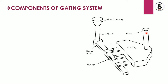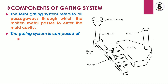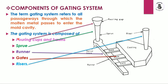In this video we are focusing more on the riser and risering systems and their importance in a casting process. The term gating system refers to all the passageways through which the molten metal passes to enter the mold cavity. The gating system is composed of different components: pouring cup, sprue, sprue base, runner, gates, and riser.